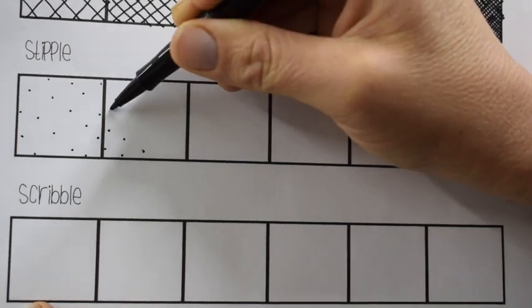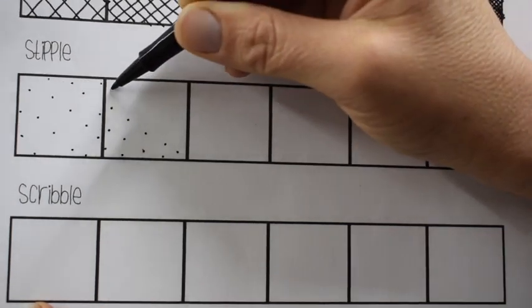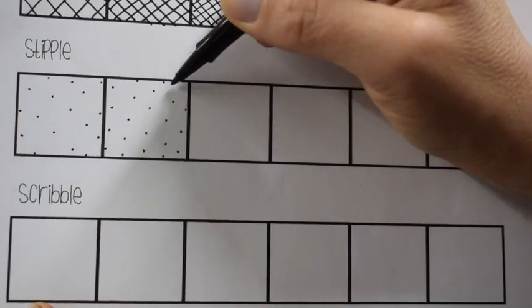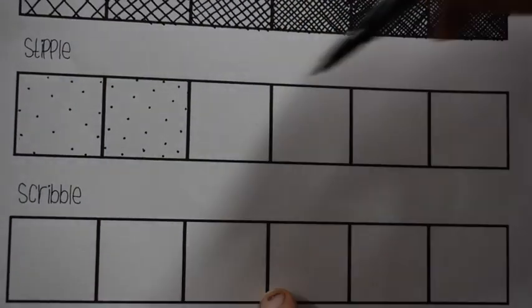So this one you're gonna hate me after doing. The first couple of boxes aren't so bad. It's basically like doing little polka dots. But the farther to the right you go per square, the more dense the dots become.